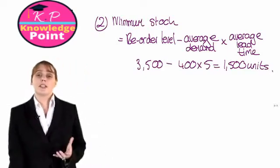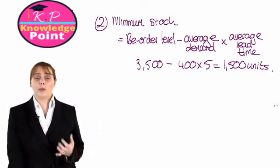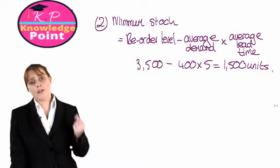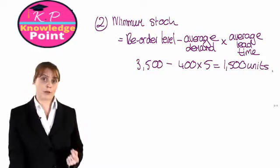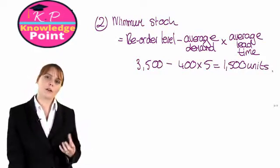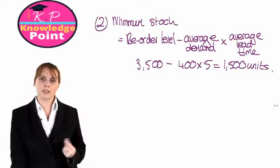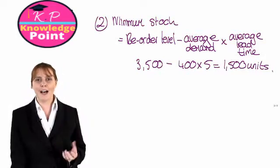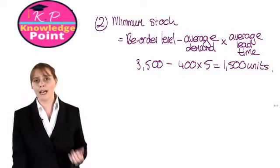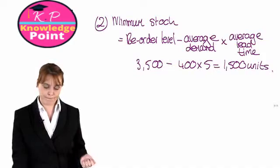So 1,500 units is the average amount of stock we expect to have in our warehouse at the time the new order arrives. It's called our buffer stock because this is the stock we hold just in case our demand is higher than expected.